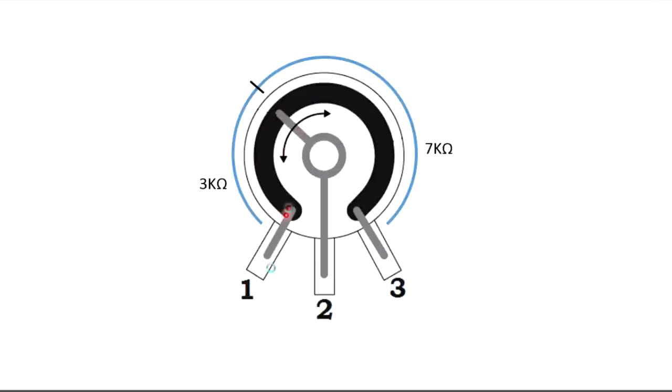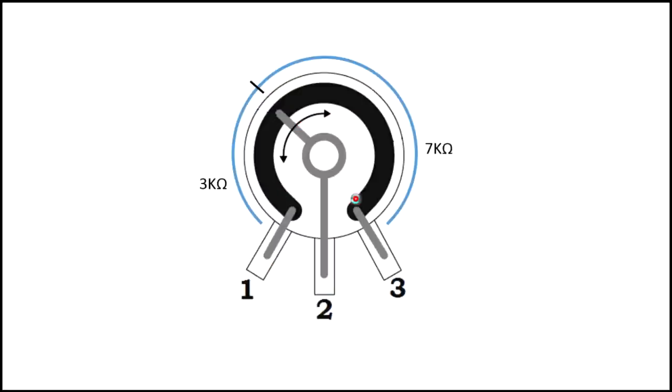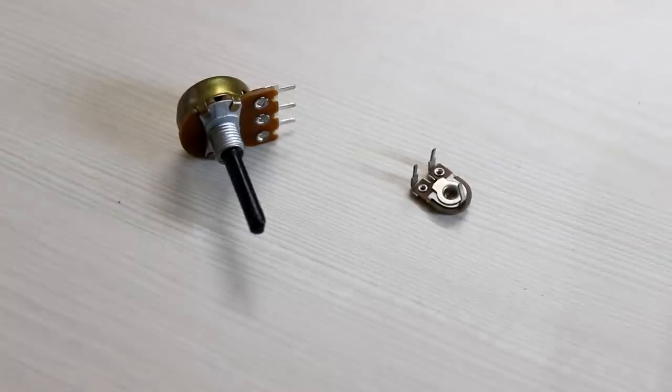As you turn the knob to the minimum position, you only get 0 kilo ohm. And as you turn the knob to the maximum position, you get 10 kilo ohm. These are some other types of potentiometers.